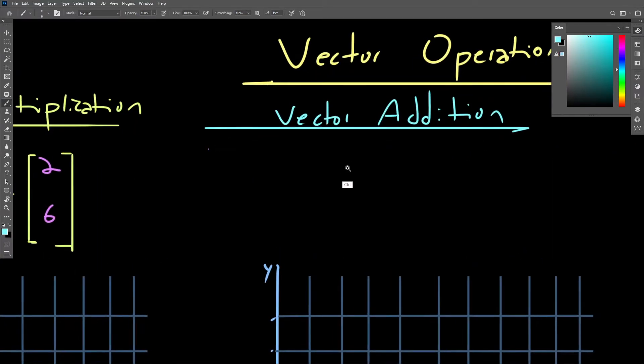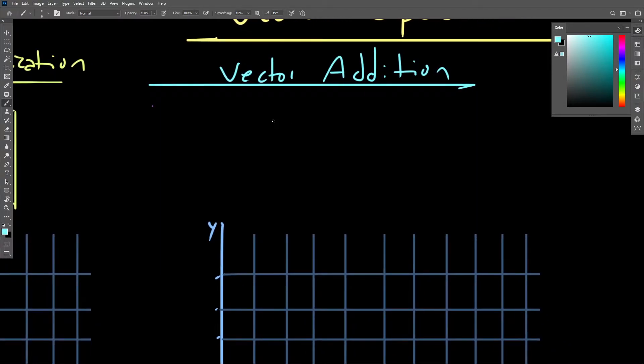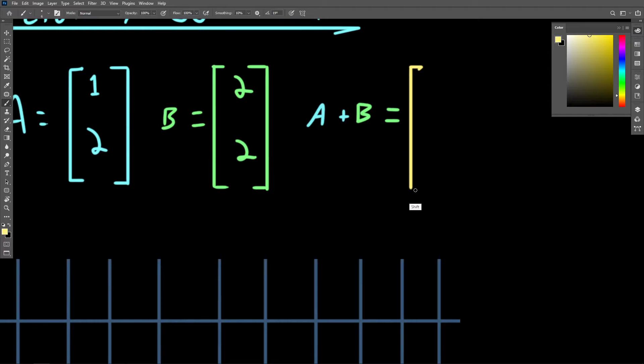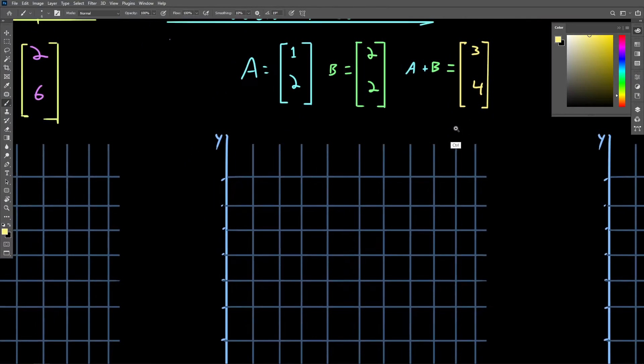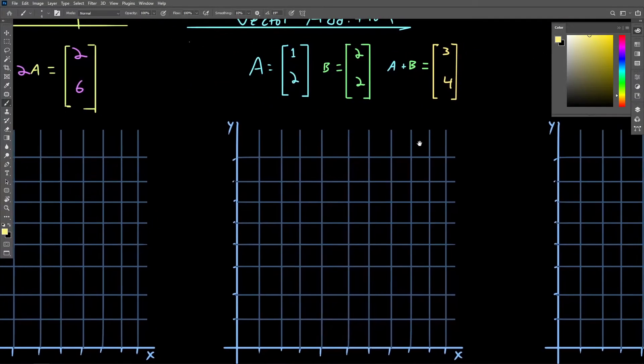Vectors of the same dimension can be added together by adding each of their component pairs together respectively. So here we have vectors a and b added together. So we'll take the x components, 1 plus 2 being 3, and the y components, 2 plus 2 being 4. And then we'll plot that out on our graph.